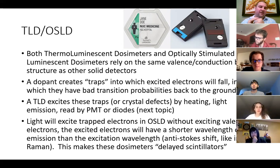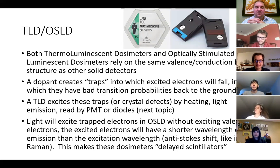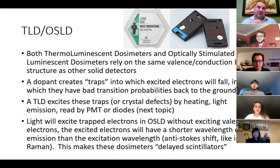We have both thermoluminescent dosimeters (TLDs) and optically stimulated luminescent dosimeters (OSLDs). TLDs are the ones in those black plastic cases — traditionally used at Brookhaven National Lab. OSLDs are more typically seen in hospitals and academic settings. Both rely on the same valence and conduction band structure, but the dopants work differently in that they actually trap the excited electrons.